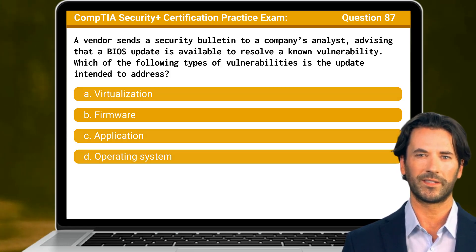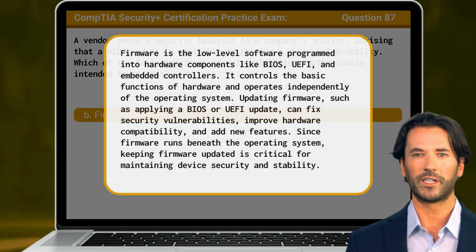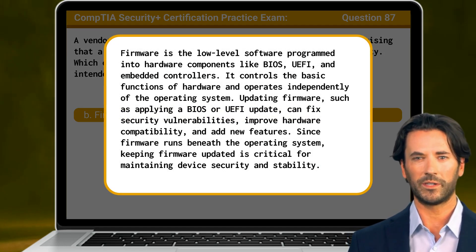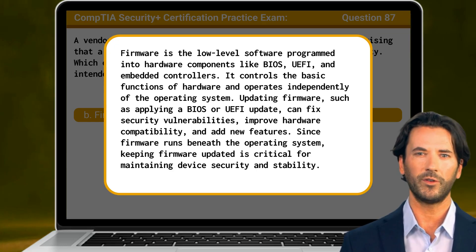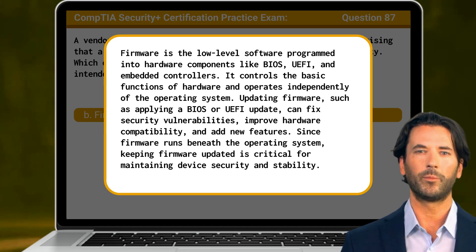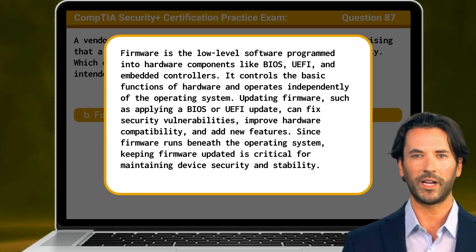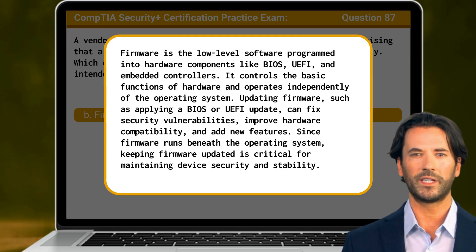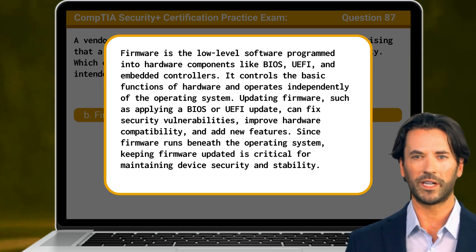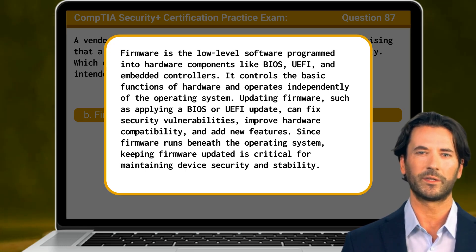The answer is B. Firmware. Firmware is the low-level software programmed into hardware components like BIOS, UEFI, and embedded controllers. It controls the basic functions of hardware and operates independently of the operating system. Updating firmware, such as applying a BIOS or UEFI update, can fix security vulnerabilities, improve hardware compatibility, and add new features. Since firmware runs beneath the operating system, keeping firmware updated is critical for maintaining device security and stability.